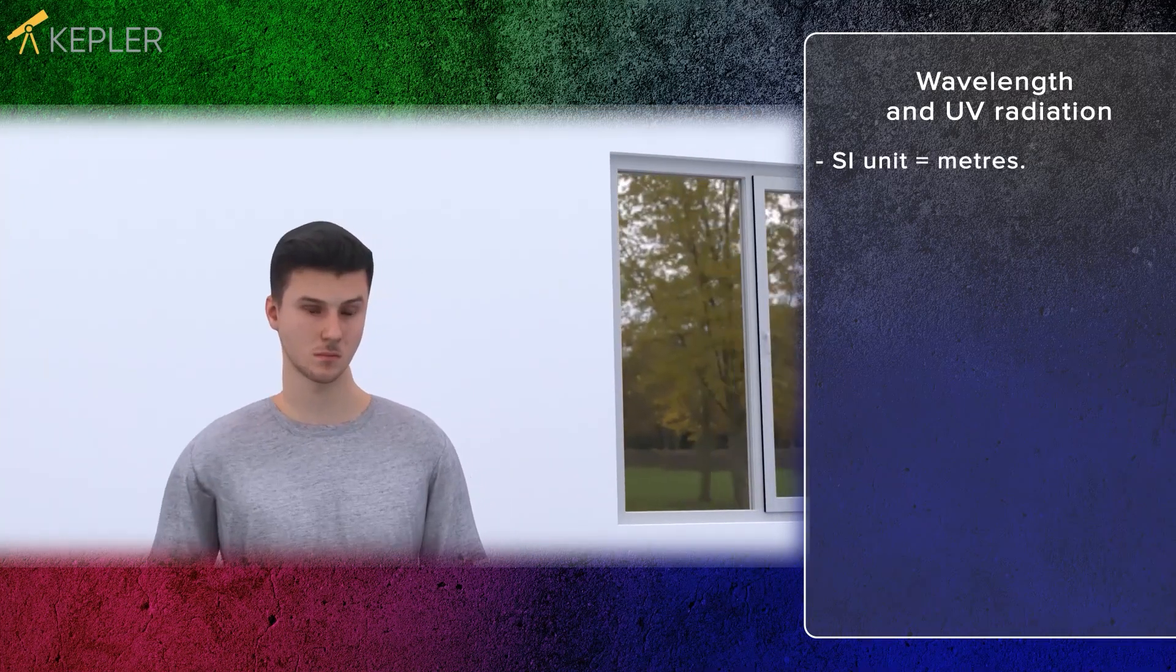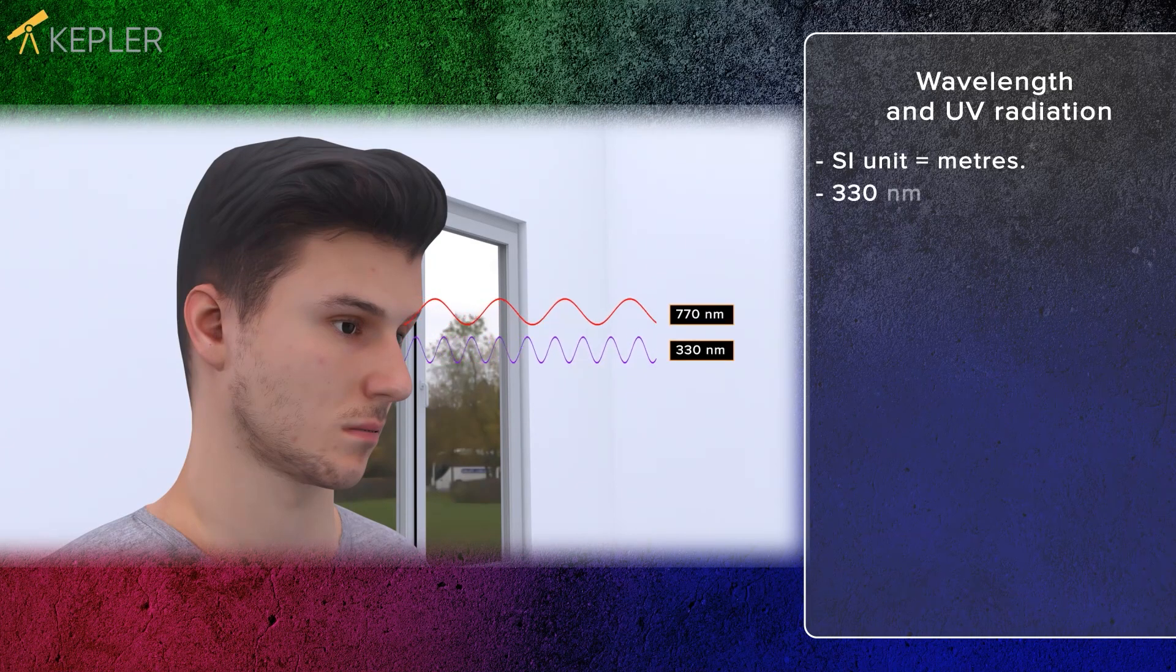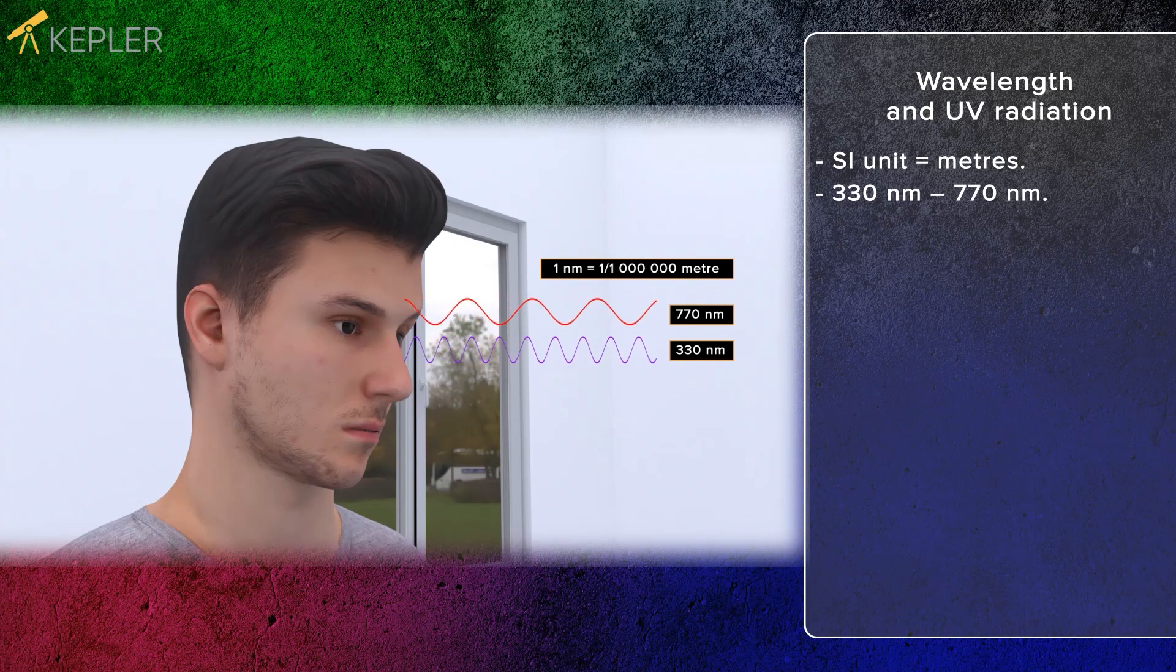An eye can see wavelengths between 330 and 770 nanometers. A nanometer is a billionth of a meter.